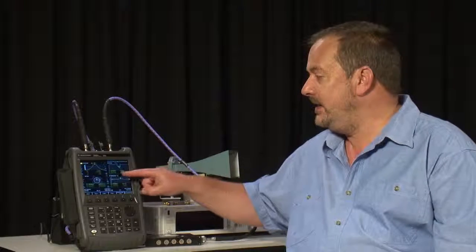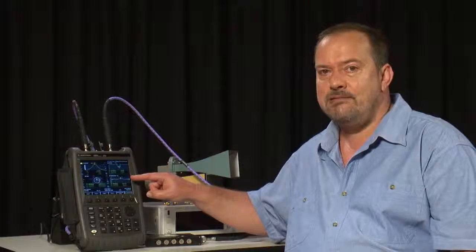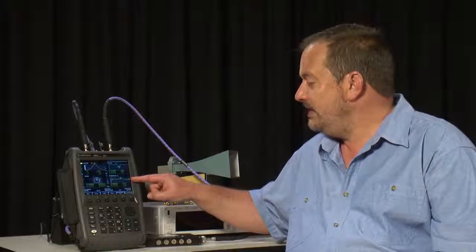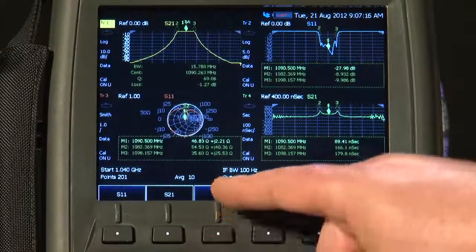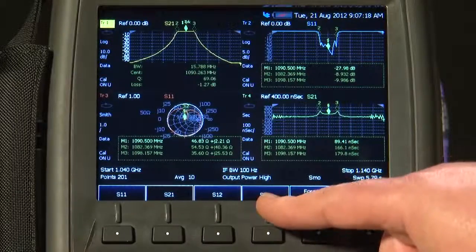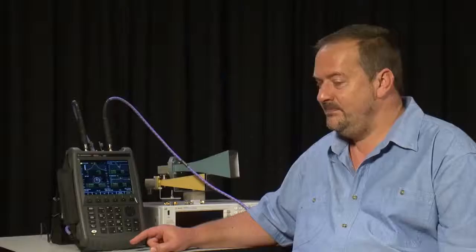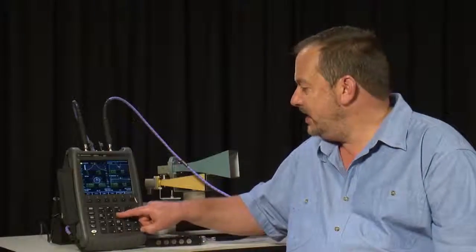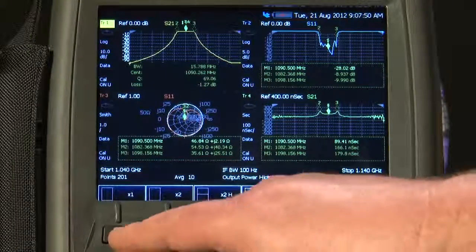In all four traces, I am measuring the forward S-parameters, S11 and S21, but as you saw under the Measure button, we can also measure the same for the reverse, S12 and S22. I will press the Trace button and go back and just display Trace 1.